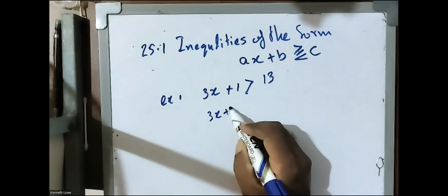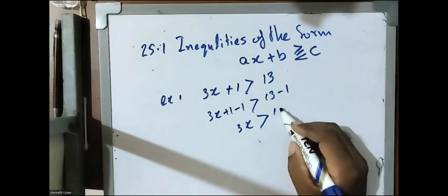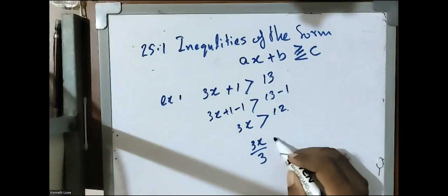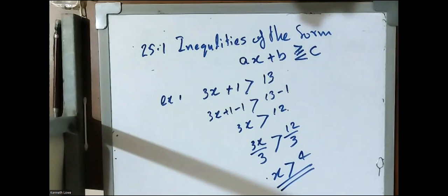First we solve this one. 3x plus 1 minus 1, 13 minus 1. 3x greater than 12. Divided by both sides by 3, 3x divided by 3, 12 divided by 3. x greater than 4. So, first example.